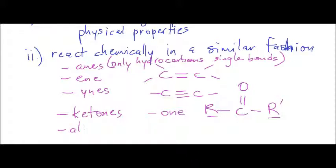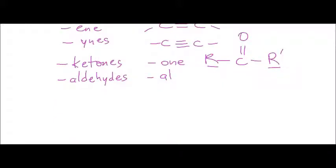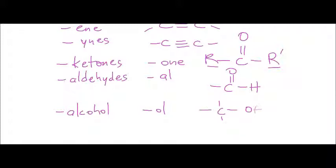Another one I've done a video for are aldehydes, and aldehydes pretty much end in -A-L. These aldehydes are at the end of a carbon chain — we have a carbon also double bonded to an oxygen, however it is bonded to a hydrogen as opposed to another alkyl group. We've already mentioned the alcohol group, which ends in -O-L, and you're looking at a carbon single bonded to an O-H, found at the end or bonded to one of the carbons.